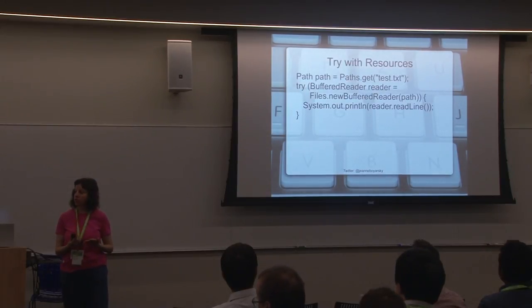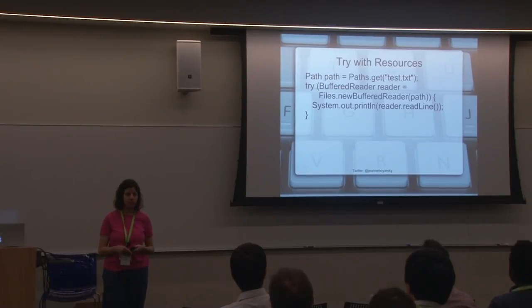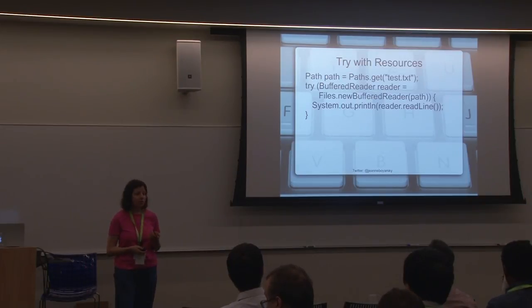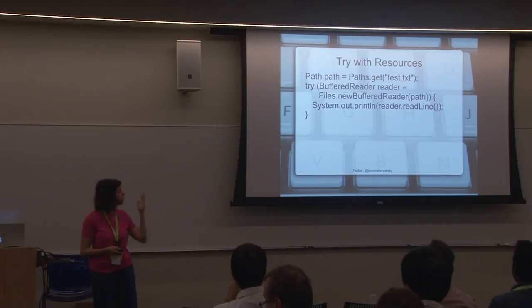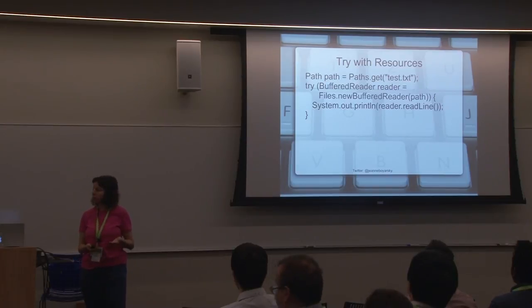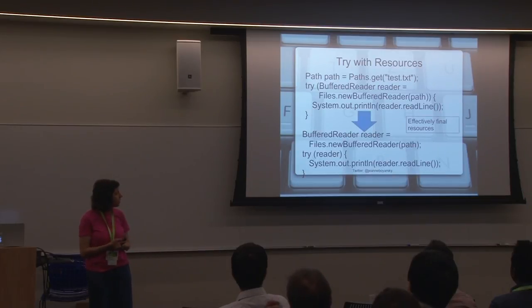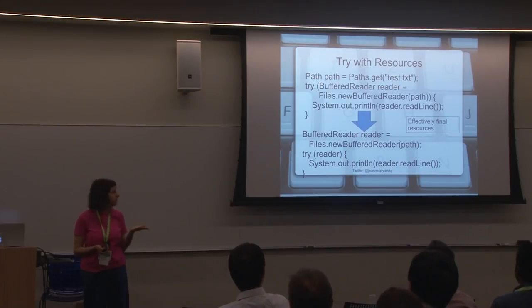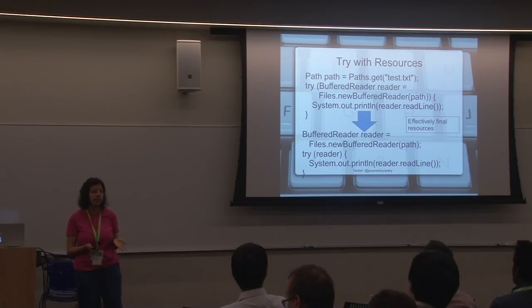Try with resources was introduced in Java 7. It's safe to assume everybody's familiar with the feature in Java 7? Try with resources allows you to not have to write the finally block. You create your resource in the try with resources, you use it, at the end it's closed whether there was an exception thrown or not. This is nice, it's a little ugly, our tries is two lines there.